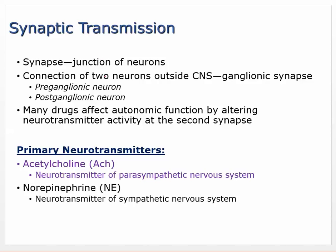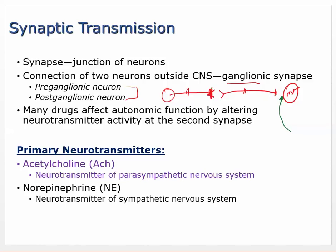Synaptic transmission: the synapse is a junction of neurons. We call it a ganglionic synapse outside the CNS. We're going to see things called preganglionic and postganglionic — coming from the spinal cord, there's a synapse, and then you have your organ. Many drugs affect autonomic function by altering neurotransmitter activity at the second synapse. The first synapse is nicotinic, and the drugs we're talking about have their effect at the organ — that's where you have muscarinic receptors.